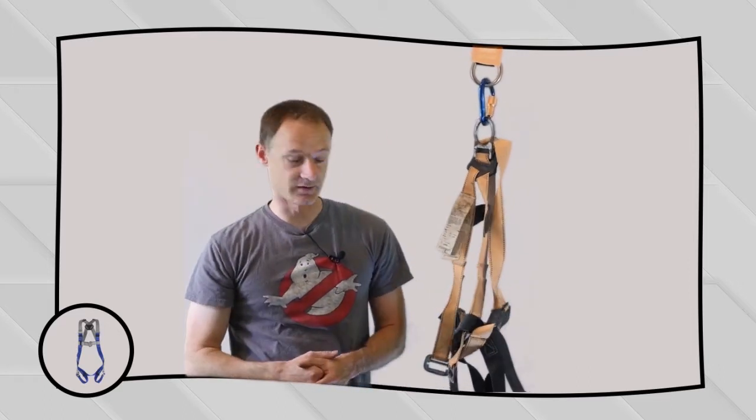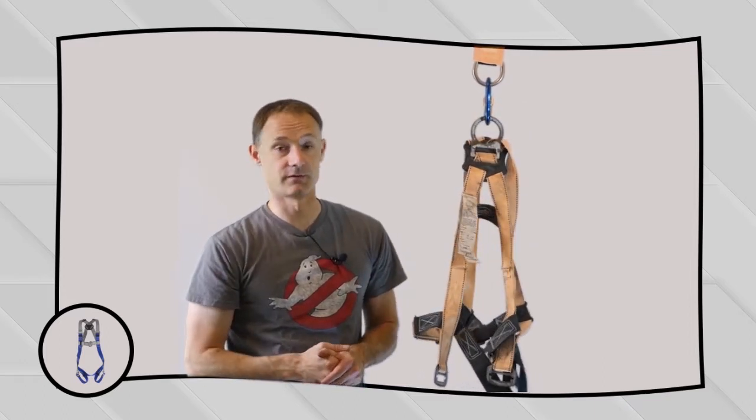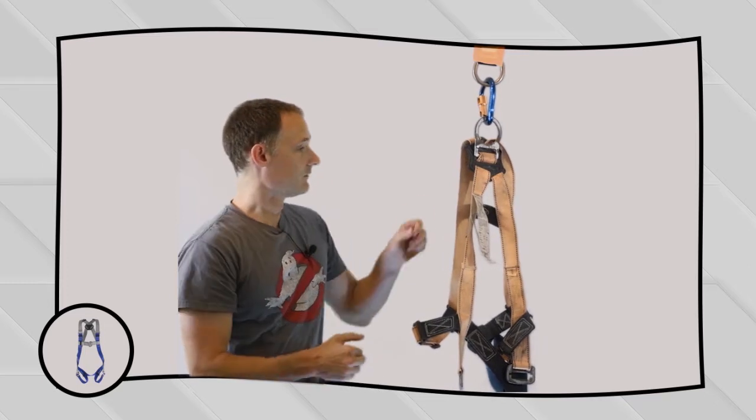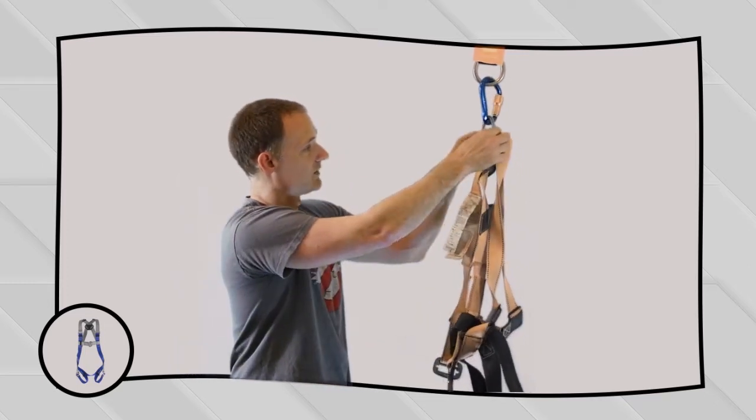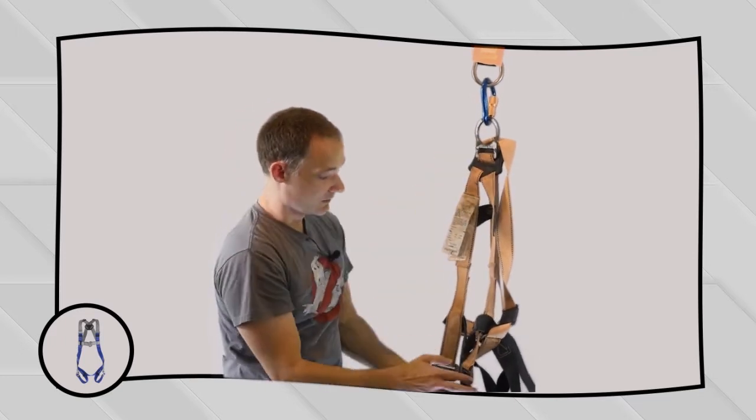If you're using tongue buckles, you want to make sure that the straps can move through the tongue buckle freely and that the grommets aren't out of round or damaged in any way. So take a look at all the hardware components and just make sure they're in good condition and that there's no distortions on any of the components.